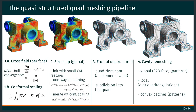Going back to the quad meshing pipeline that we use: we build a cross-field per CAD face with conformal scaling, and then we build a size map which takes into account all the small features, and we blend both size maps.